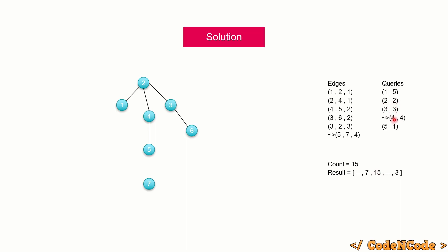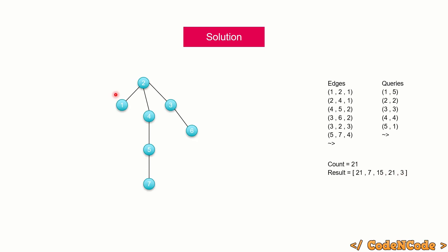Next query qi = 4: add an edge connecting components of size 6 and size 1, so 6×1 = 6, add 6. Count becomes 21. Our edge pointer goes out of range, so no more edges to add. Store 21 at position 4. For the final query, we also can't add more edges, so store count 21 at position 1. The final answers are: 21, 7, 15, 21, 3.